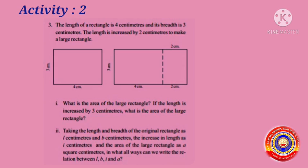Activity number 2. The length of a rectangle is 4 cm and its breadth is 3 cm. The length is increased by 2 cm to make a large rectangle. We have to find what is the area of the large rectangle. And if the length is increased by 3 cm, what is the area of the large rectangle? Taking the length and breadth of the original rectangle as L cm and B cm, the increase in length as I cm, and the area of the large rectangle as A square cm, in what all ways can we write the relation between L, B, I and A?